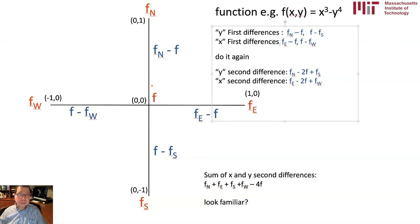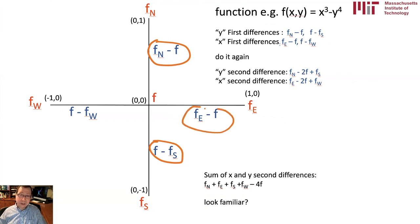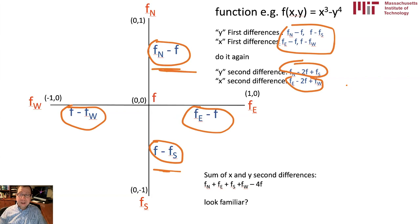First differences vertically are always above minus below, the corresponding thing horizontally is going to be the right minus the middle. So what we're going to do is we'll take f_n minus f because f_n is above f, and we'll take f minus f_s since f_s is below f. Similarly, we're going to take f_e minus f because e is to the right, and f minus f_w because it's to the right, and so these are my four first differences. Now to get a second difference, what I have to do is I have to take this minus this. So if I take this one minus this one, I hope you can see that this is the result vertically, and this is the result here horizontally. And if I add the two second differences, I will get this result, and I hope this looks familiar.